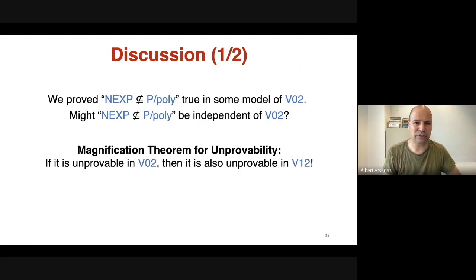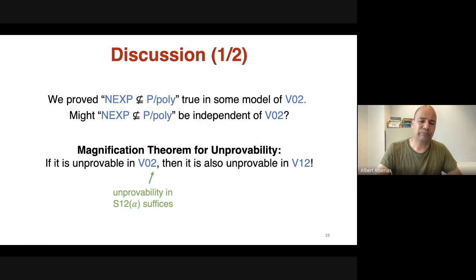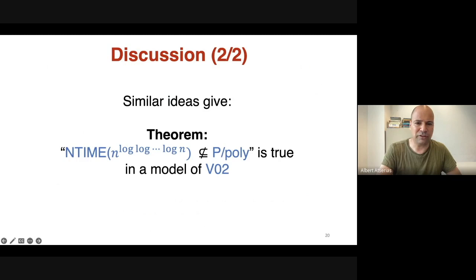Besides the consistency result, we also prove a magnification result for unprovability: if NEXP ∉ P/poly is unprovable in V⁰₂, then it is also unprovable in the much stronger theory V¹₂. This would settle Razborov's program. We also note that the whole theory works for barely super-polynomial time — like non-deterministic time n^{log log ... log n} for any number of logs — based on an easy witness lemma version by Demure and Williams.